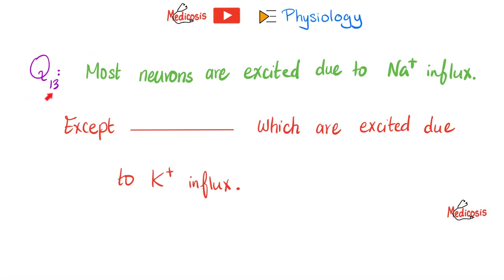Question of the day. This is the 13th question. The previous 12 are in this playlist called Physiology. Most neurons are excited due to sodium influx. Sodium coming into the cell. Except what kind of neurons, which are excited due to potassium influx. Is this even possible? Yes, indeed. And we're talking about Physiology, not Pathology. Let me know the answer in the comment section. You'll find the answer in the next video.